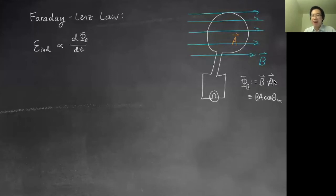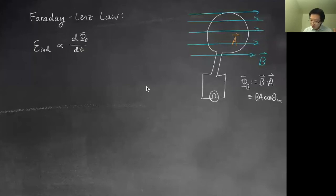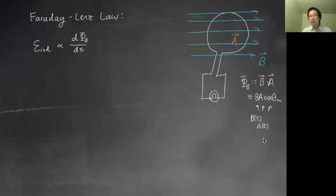This is more elegant from a mathematical point of view. If you want to make it simpler: it takes into account the angle because if the loop is oriented so that no field passes through it, there's no flux through the loop. So if you're able to change either the angle, the area, or the magnetic field strength — as long as one of these changes as a function of time — you will set up a potential difference across the loop.